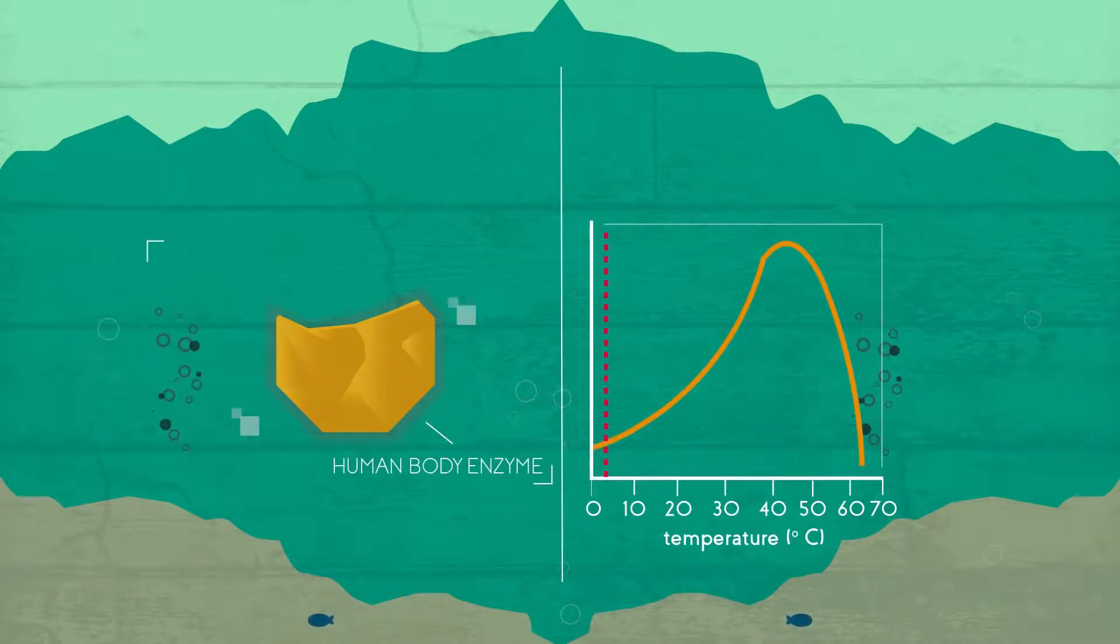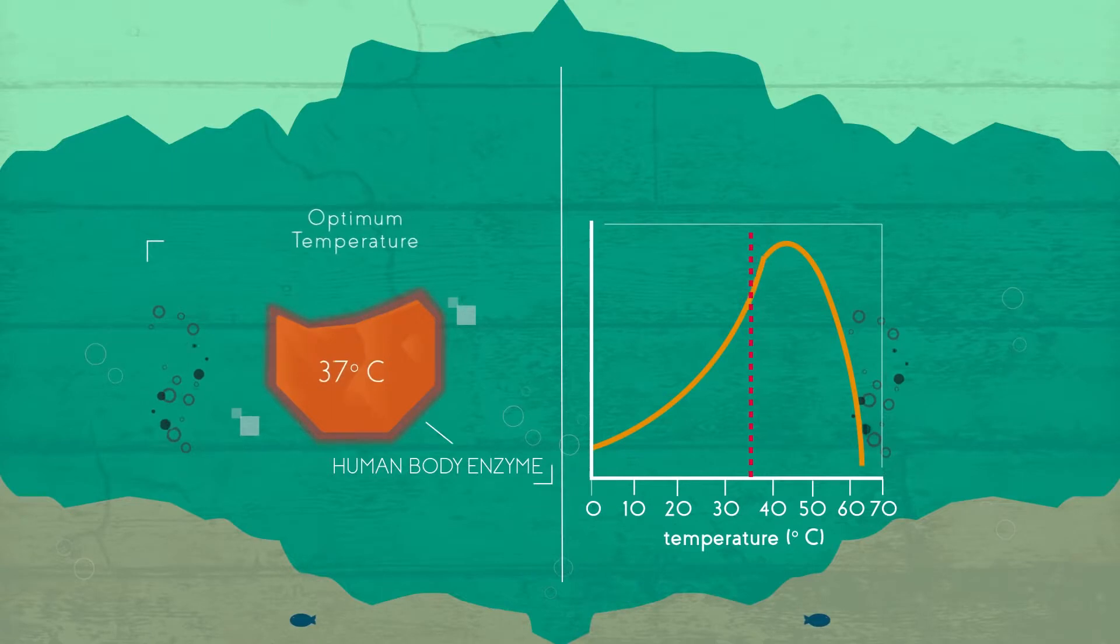With most enzymes having an optimal temperature of 37 degrees and then denaturing above that.